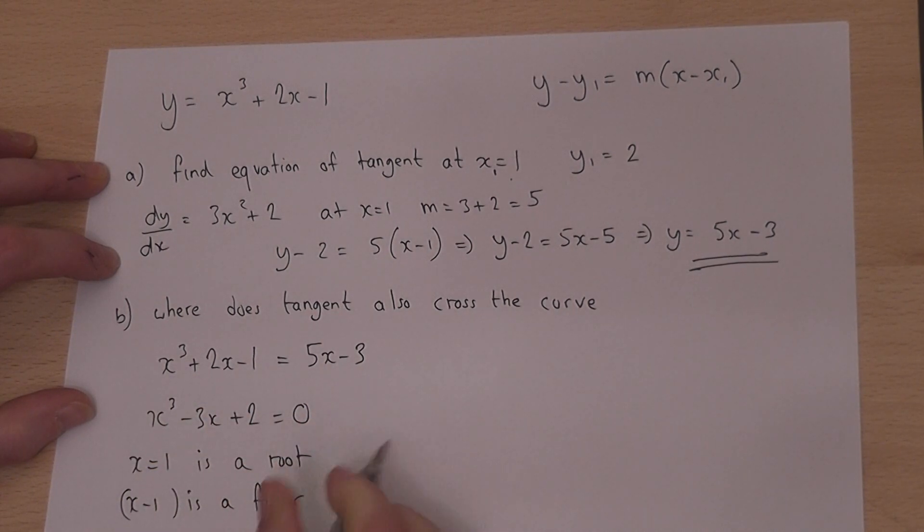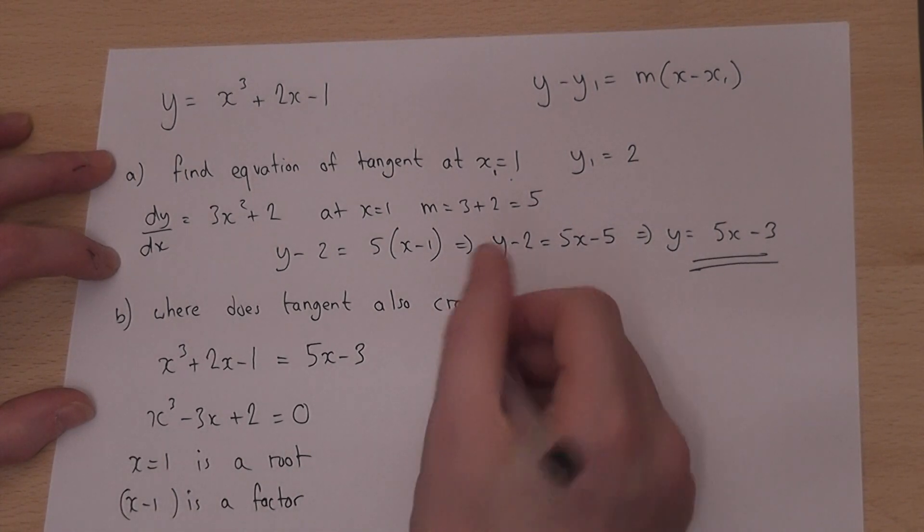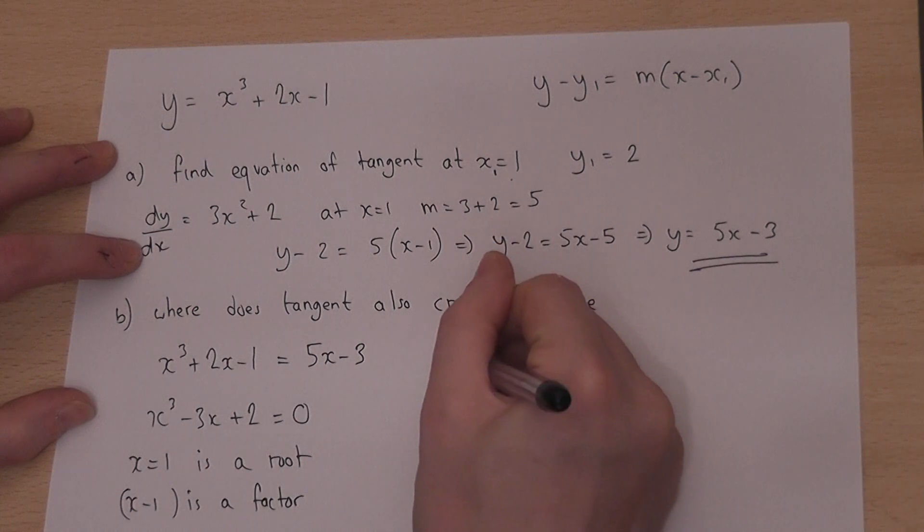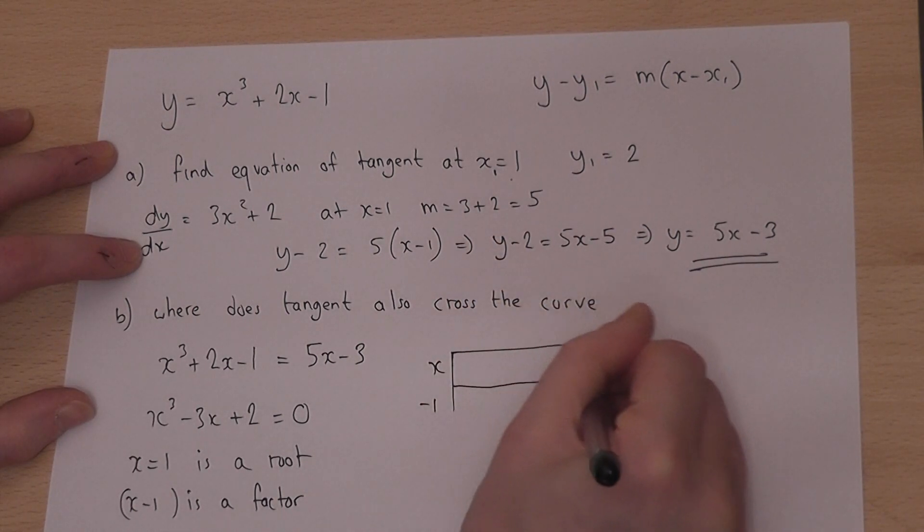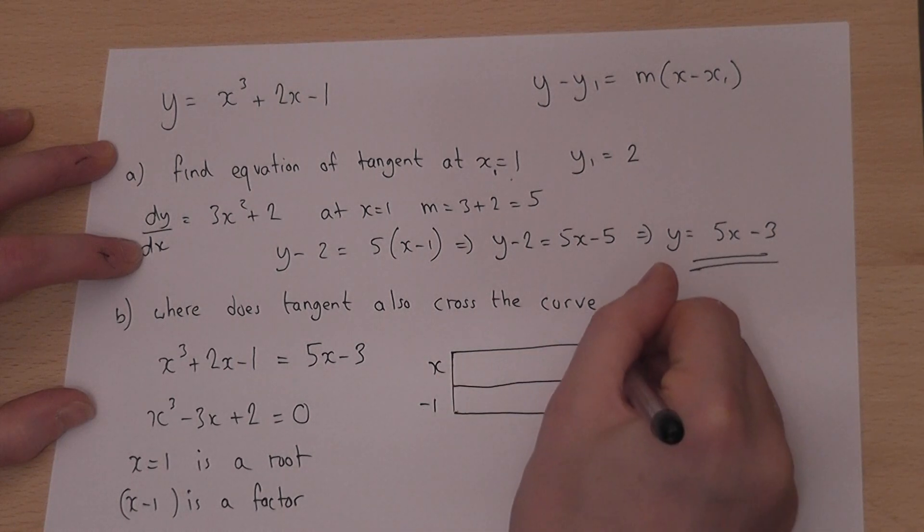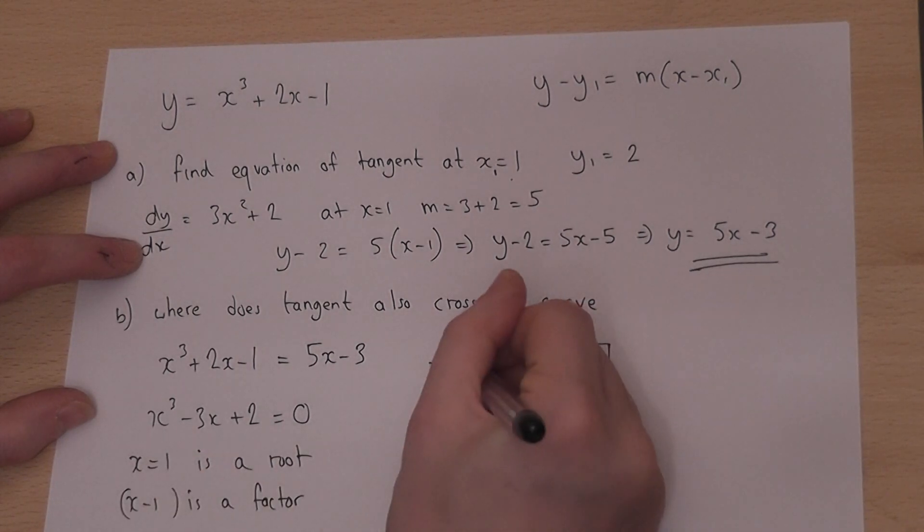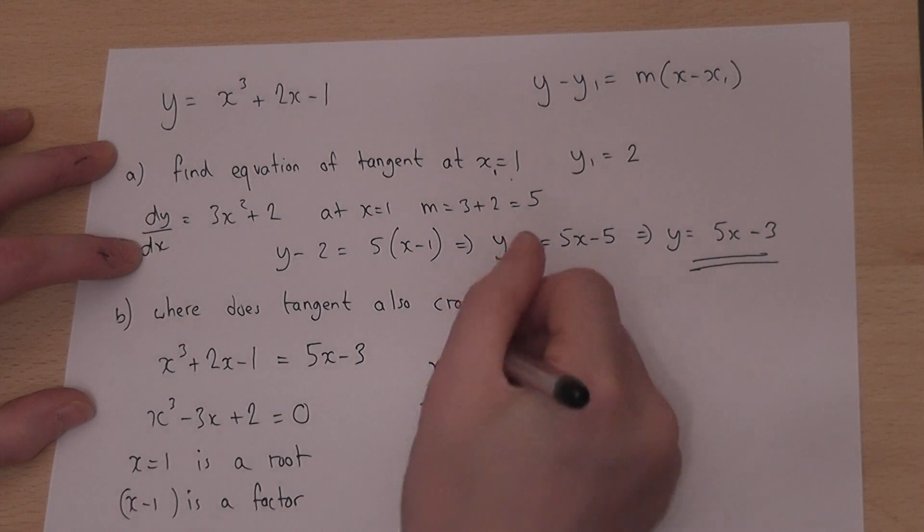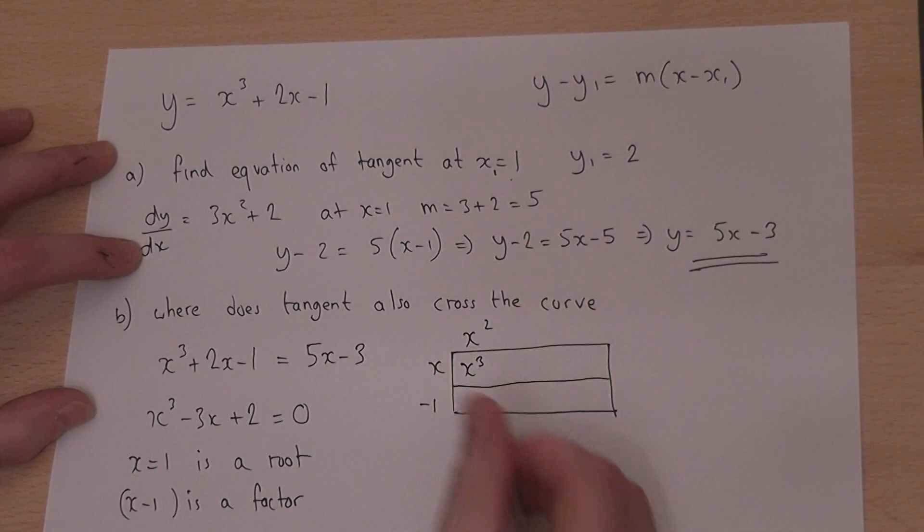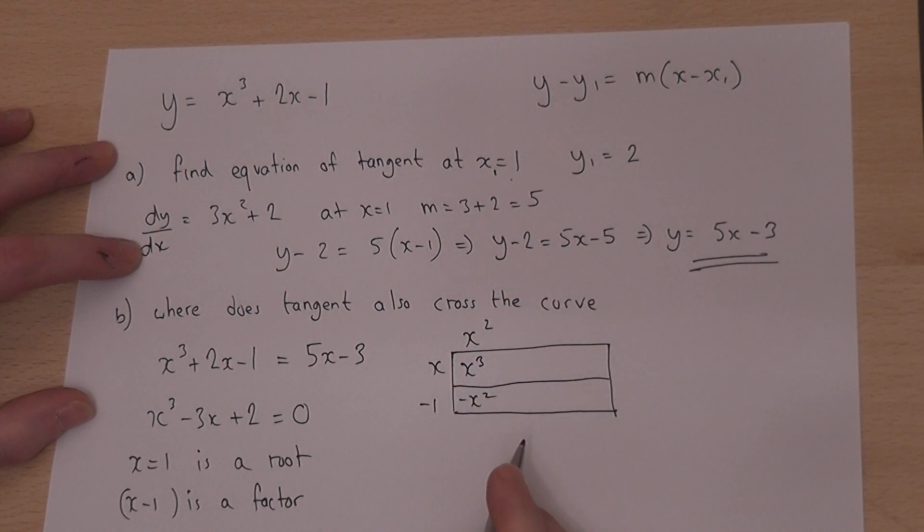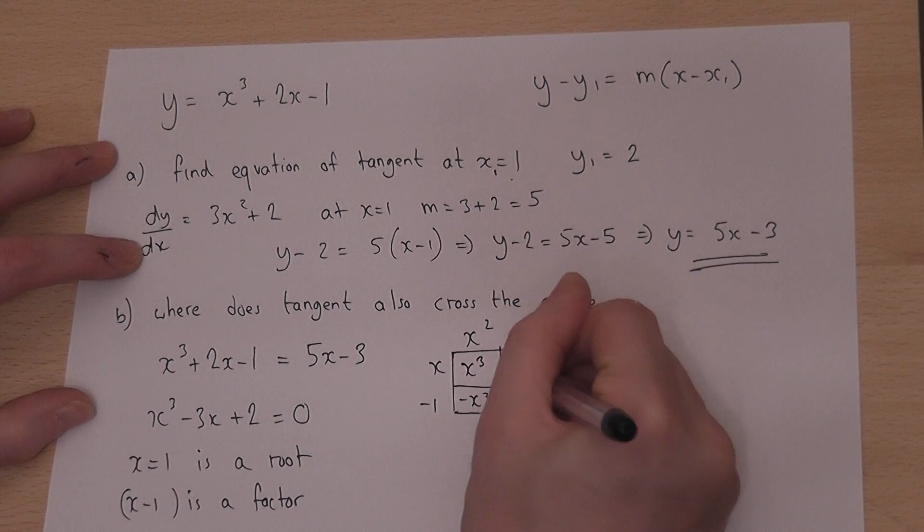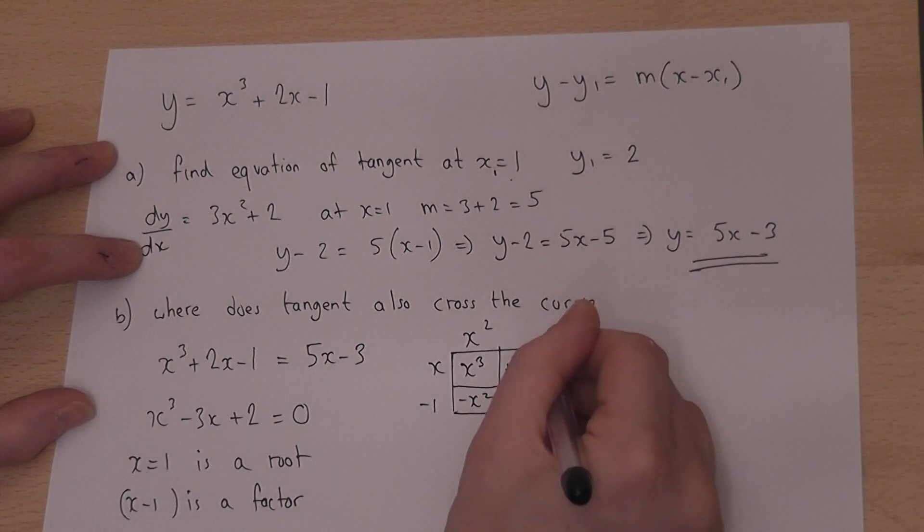So I've got to divide this expression here by x minus 1. Here's my method: x minus 1. Right, x squared. I want an x cubed. This requires an x squared. Minus 1 times x squared is minus x squared. I want there to be no x squareds, so I put another plus in there. They cancel off.